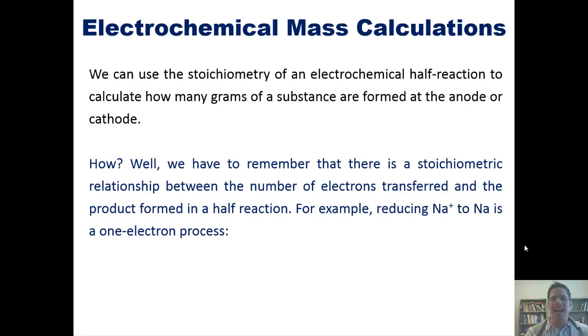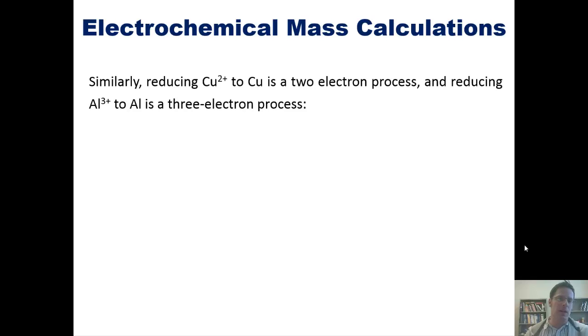For example, reducing Na+ to Na, as shown here, is a one-electron process. Thus, there is a one-to-one stoichiometric ratio between sodium cation here and electron. Similarly, reducing copper 2+ to copper 0 is a two-electron process, as shown here. And reducing aluminum cation to aluminum 0 is a three-electron process. So once again, there is a stoichiometric relationship between each of these ions and the number of electrons that they require to be reduced.